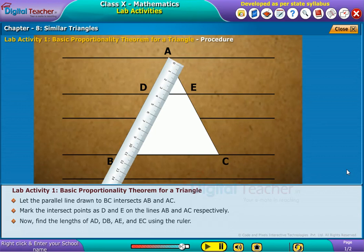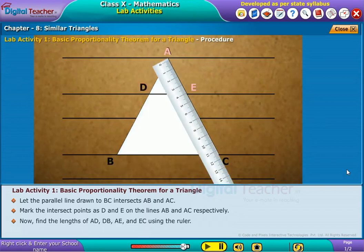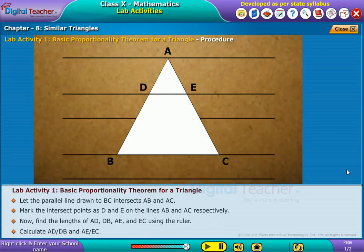Now find the lengths of AD, DB, AE, and EC using the ruler. Calculate AD by DB and AE by EC. Observe the result.